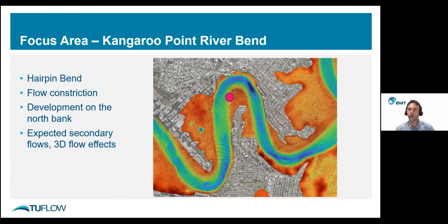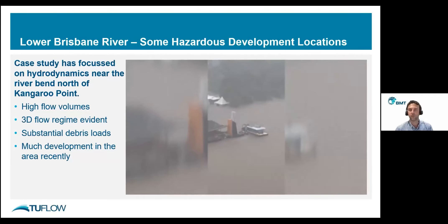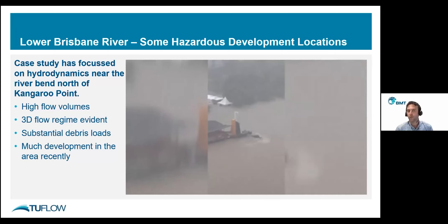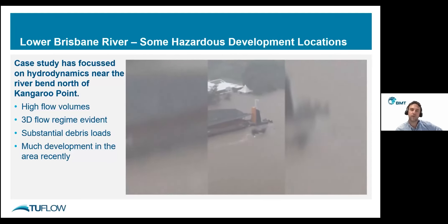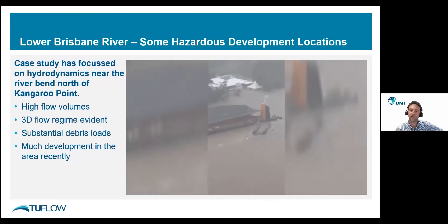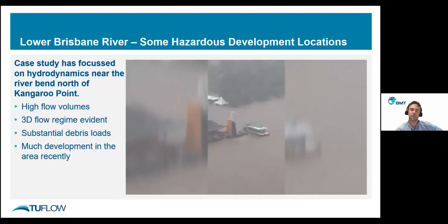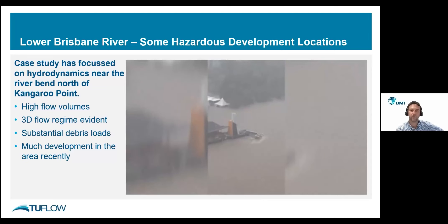To illustrate some of the dangers of this area, footage from the flood in January this year shows the location of the ferry terminal. A houseboat that came free of its moorings drifted down the river, impacted the ferry terminal, and rather rapidly capsized. There was actually someone on board at the time, and amazingly they floated to the next pontoon where they were rescued amidst piles of debris. This location is a clear focus point for dangers in the river — high flow volumes, a strong 3D flow regime, substantial quantities of debris, and a large amount of development in the area.